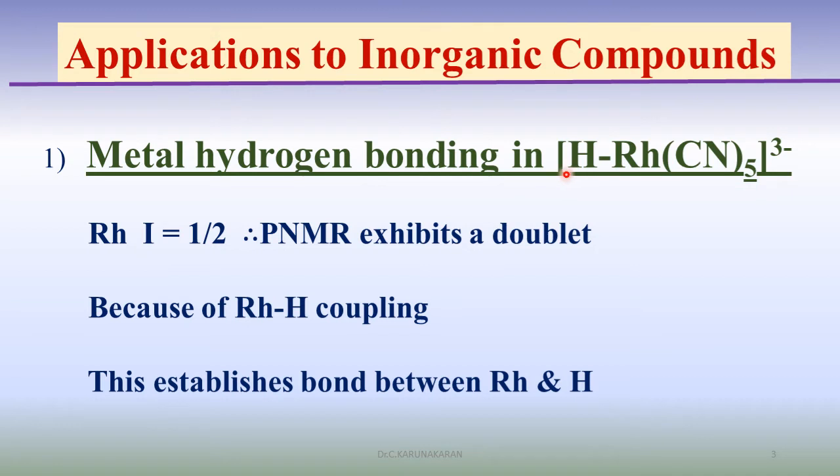Let us see quickly a few applications of NMR to inorganic molecules. One, metal-hydrogen bonding in this complex molecule is established using proton NMR. The nuclear spin quantum number of rhodium nucleus is 1/2. Therefore, proton NMR gives a doublet because of direct bond coupling.